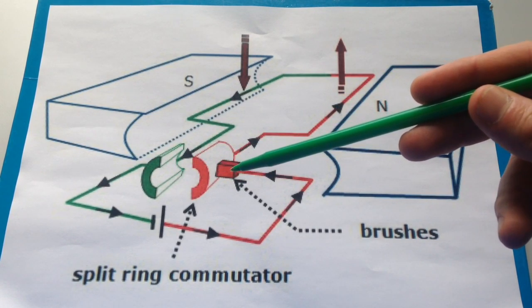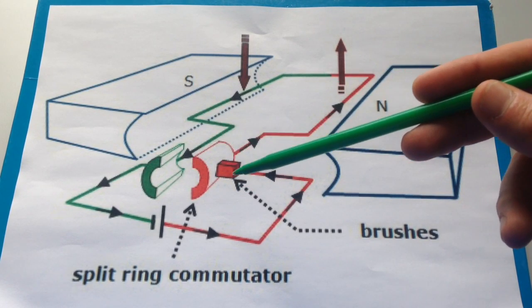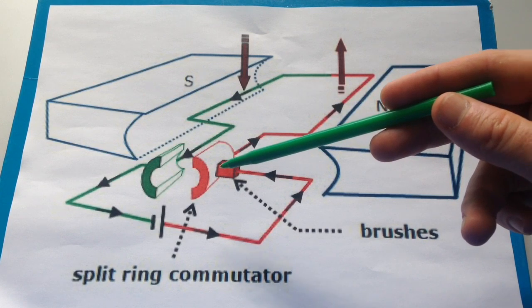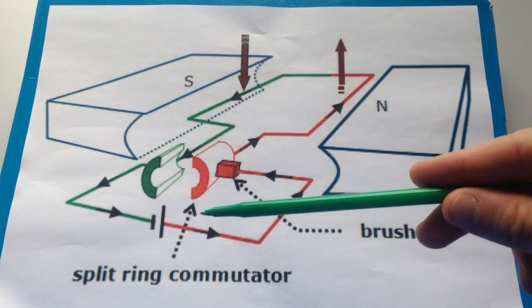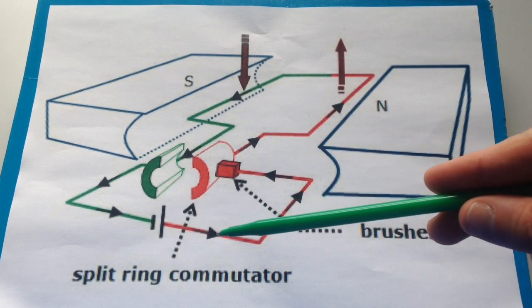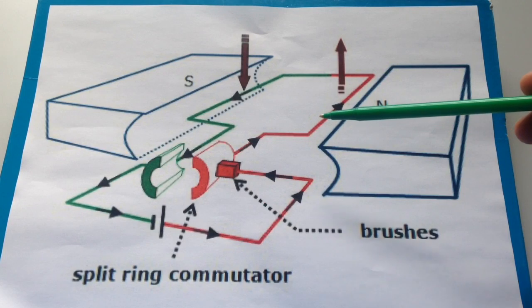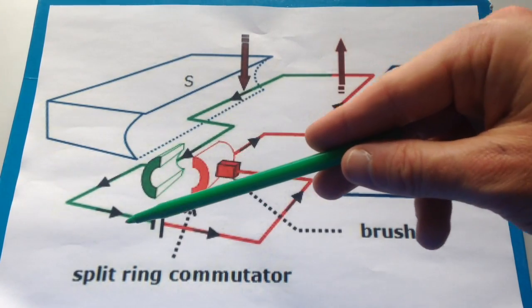And then the brushes, rather than just being those single sticky-uppy wires that you had, they're drawn as these cubes that are touching the split ring commutator. So at the moment, you can see that the circuit is connected. We've got the current flowing, conventional current flowing from the positive terminal of the cell or the power supply around to the negative end.